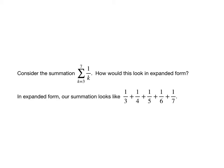So in expanded form, that summation would look like one-third plus one-fourth plus one-fifth plus one-sixth plus one-seventh. Again, we're using that lower limit and that upper limit to tell us where to start and where to stop our summation.